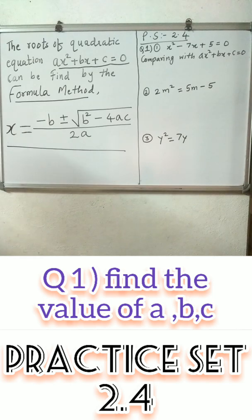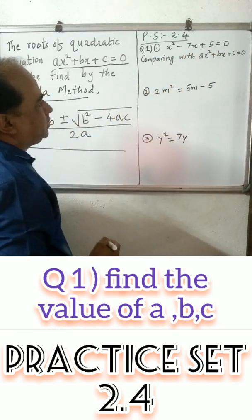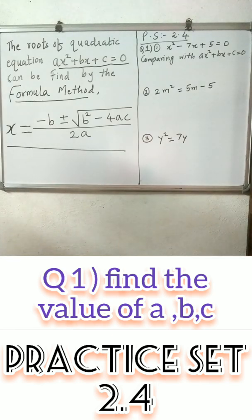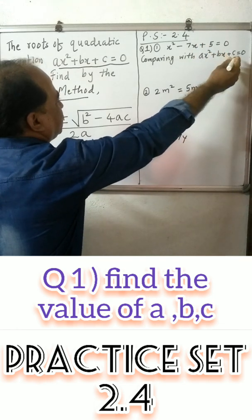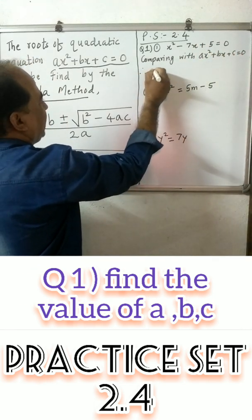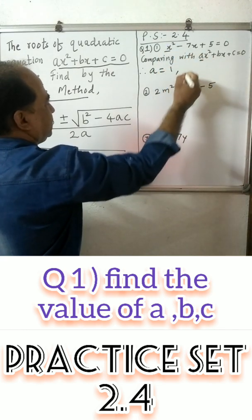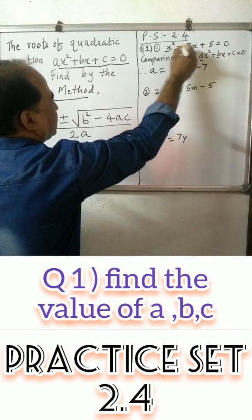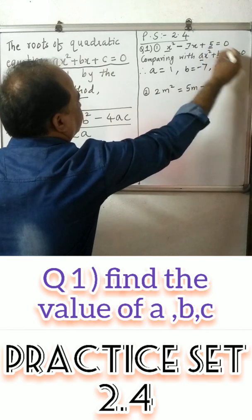Practice Set 2.4, Question number 1, first example: x² minus 7x plus 5 is equal to 0. Here you have to find the values of a, b, and c. Comparing the given equation with the standard form x² + bx + c = 0, we get: a is equal to 1, b is equal to minus 7 — you should consider this negative sign — and c is equal to 5.